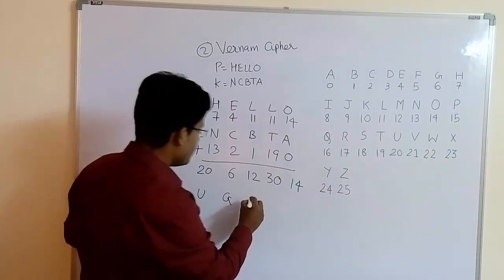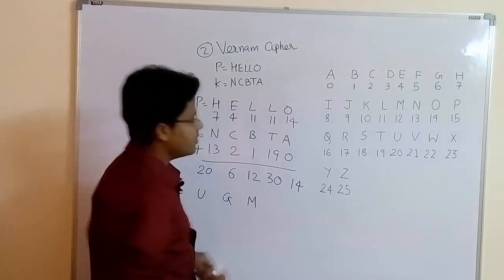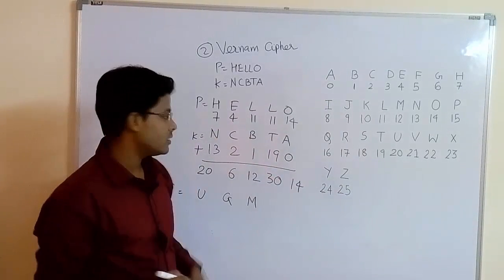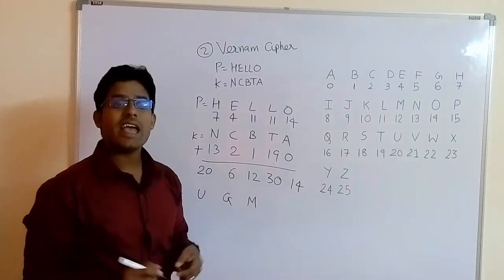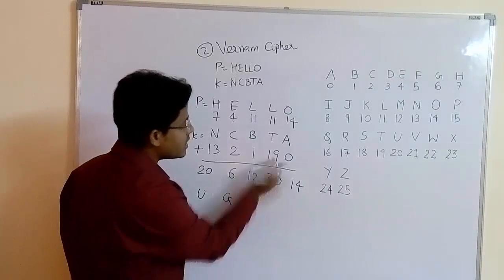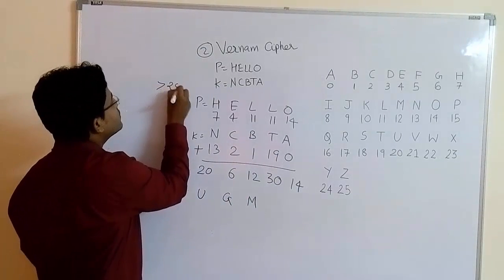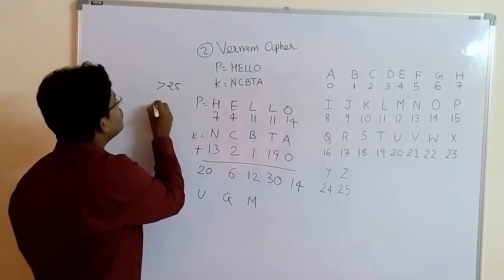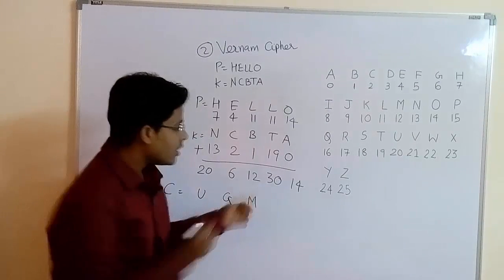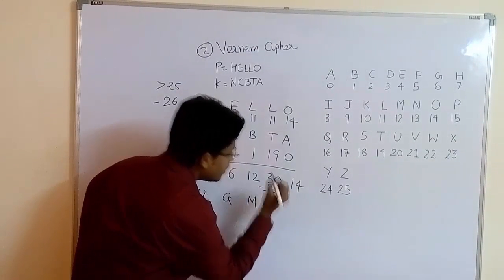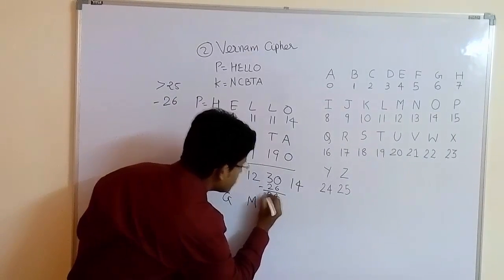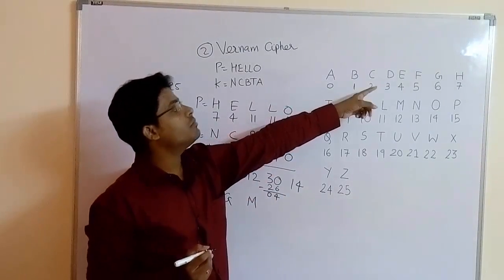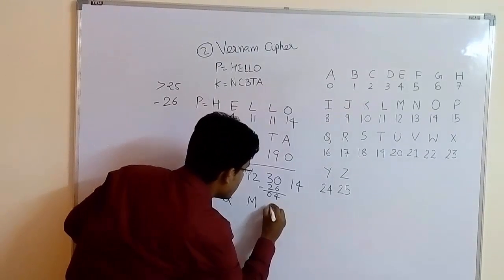12 is M. Now here is a problem — we don't have any alphabet associated with 30 because our numbers stop at 25. The rule is: whenever you get any number after addition that is greater than 25, you have to subtract 26 from that number. So 30 minus 26 gives you 4. Now look at what alphabet is associated with number 4 — that is E. So your answer is E.